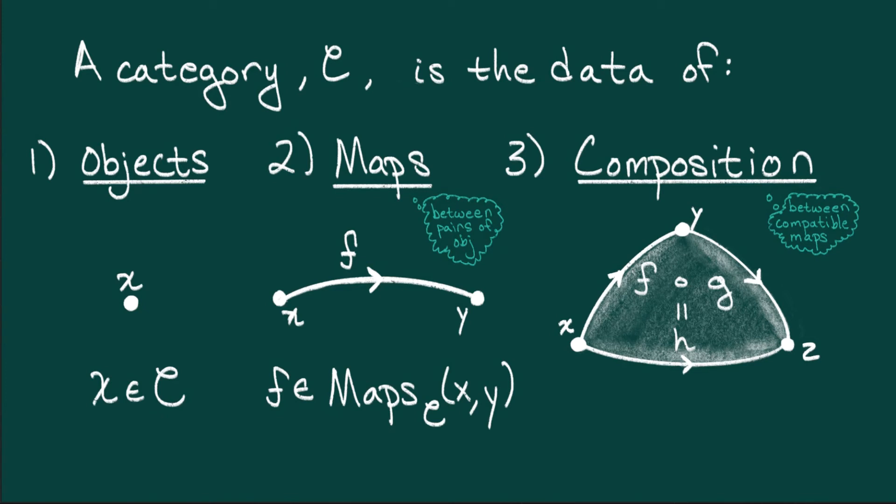And that's it. If you want to construct a category, you have to specify three pieces of data. Objects, maps between pairs of objects, and a procedure for composing compatible pairs of maps.